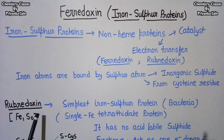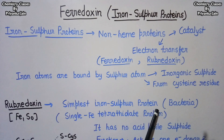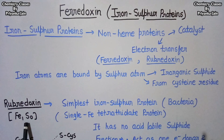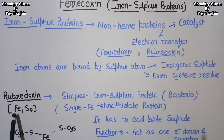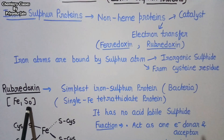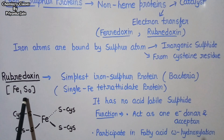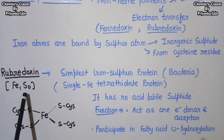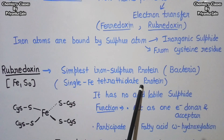First we look at the general structure and properties of rubredoxin, then we will come to ferredoxin. Rubredoxin is the simplest type of iron-sulfur protein, found in bacteria, and is denoted as Fe1S0. Fe1 means there is one iron atom present, and S0 means there is no inorganic sulfide group present. There are sulfur atoms from cysteine residues, but no inorganic sulfide bridging groups — it is a single iron tetrathiolate protein.